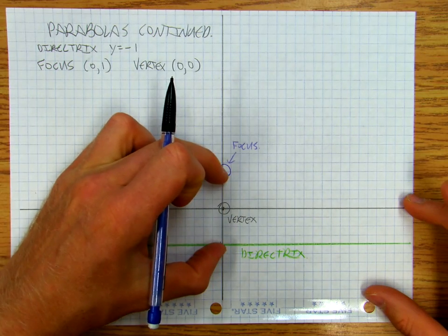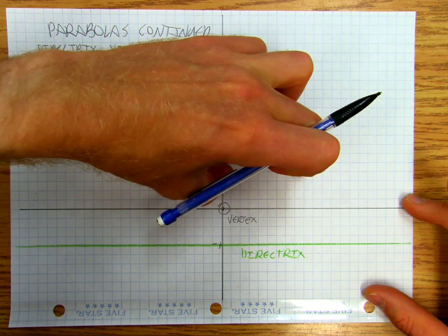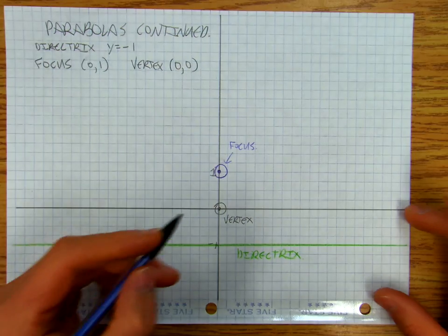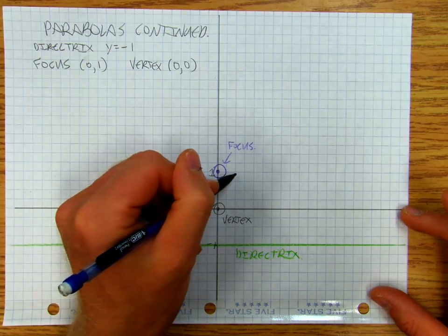and I crank out that distance and that distance, and that gives me two points on my parabola. And so then I've got three points on my parabola, and I can start to draw it.